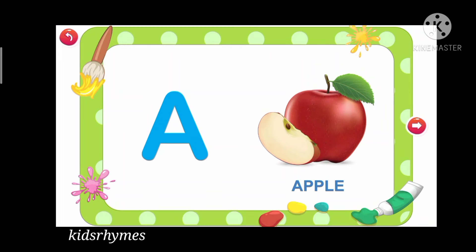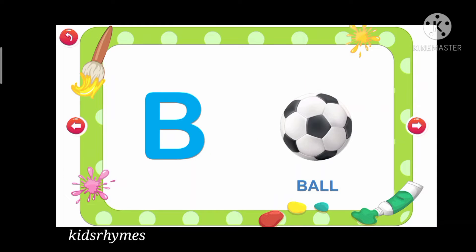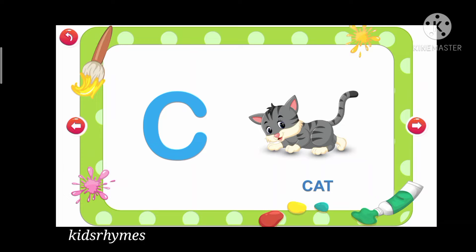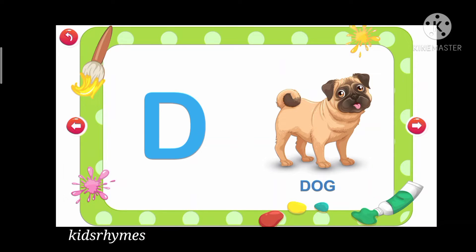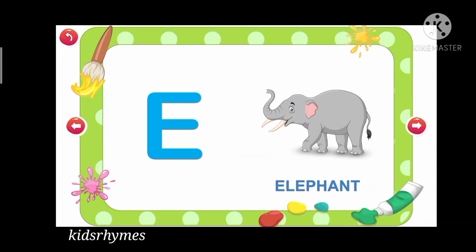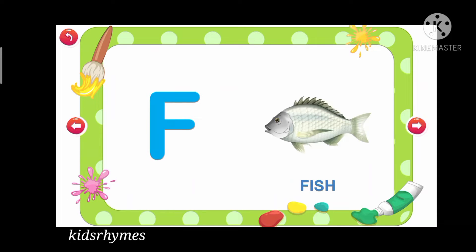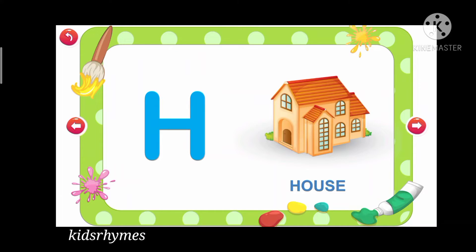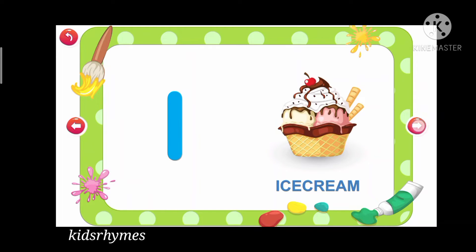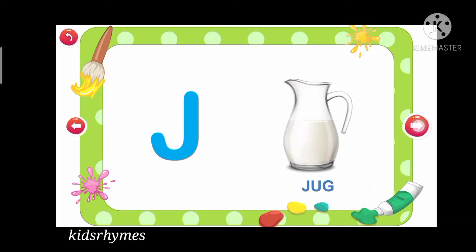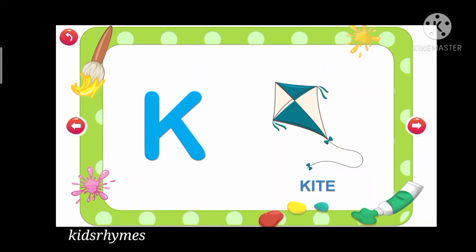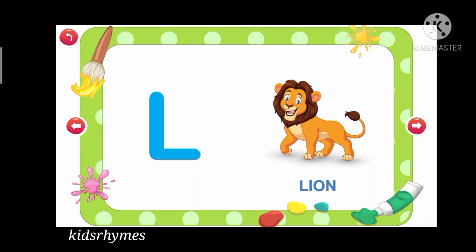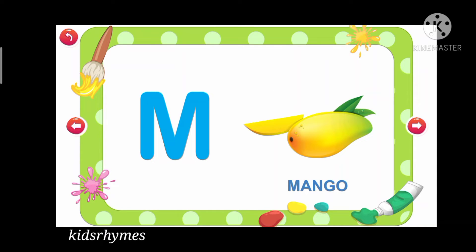A for apple, B for ball, C for cat, D for dog, E for elephant, F for fish, G for goat, H for house, I for ice cream, J for jug, K for kite, L for lion, M for mango.